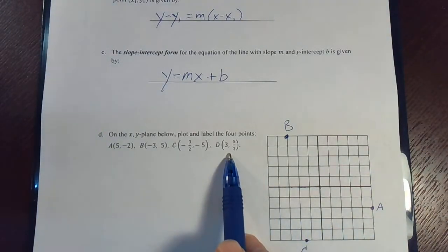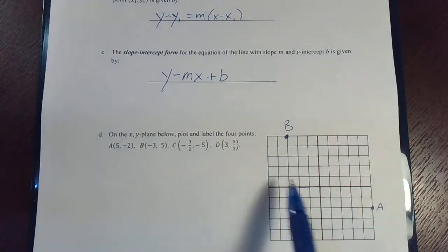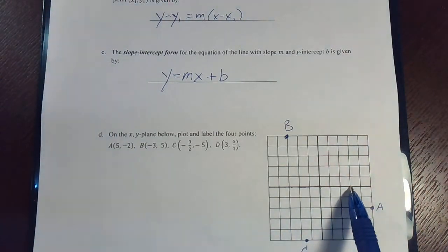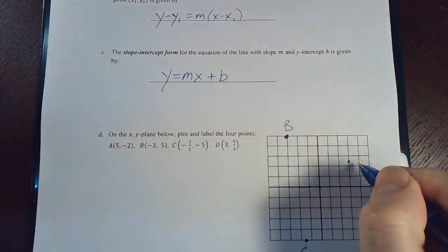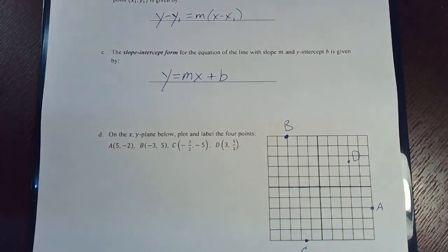Last point is three comma five halves. We'll go to the right three and then go up five halves, which is like two and a half. One, two, and then halfway up to the next one would be right there. And that would be our point d.